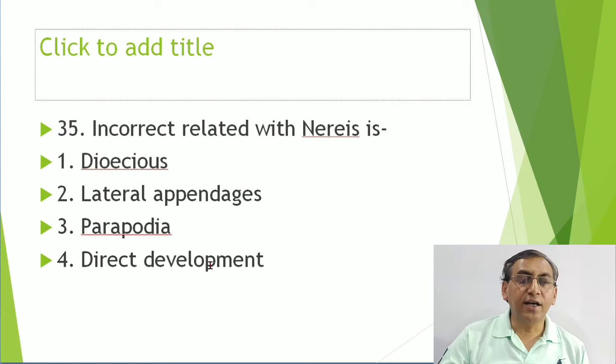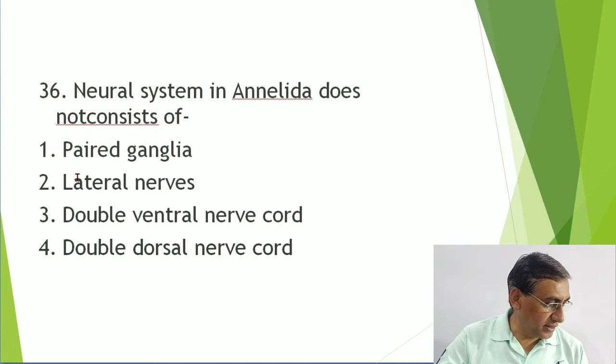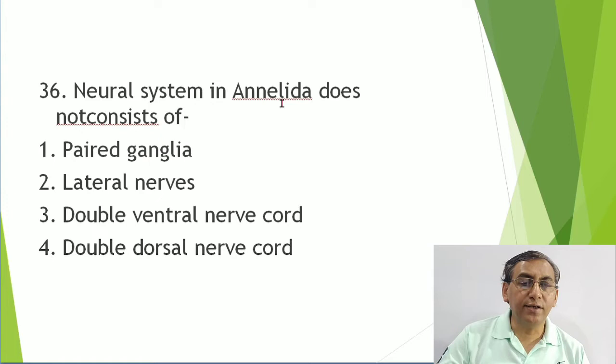Regarding incorrect character related with Nereis: they are dioecious - correct; lateral appendages - correct; they are known as parapodia - correct. What is incorrect is direct development - in Nereis development is indirect, taking place through a trochophore larva.